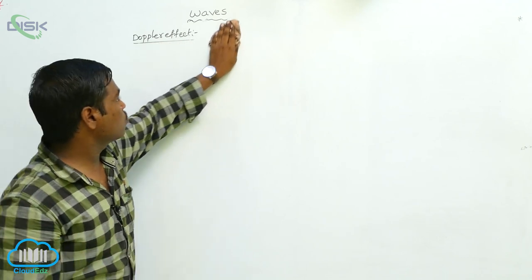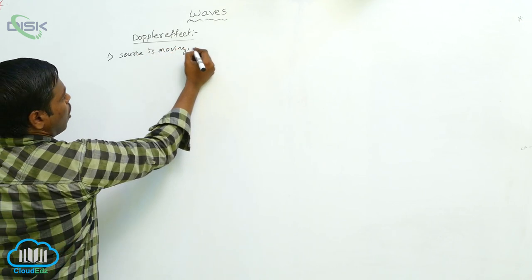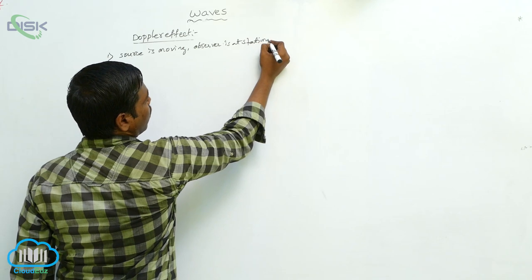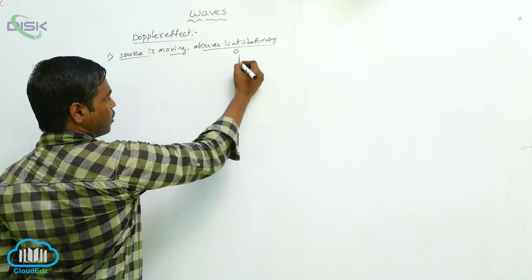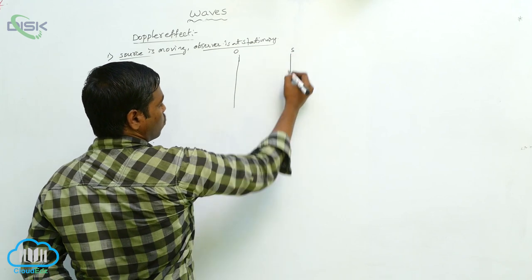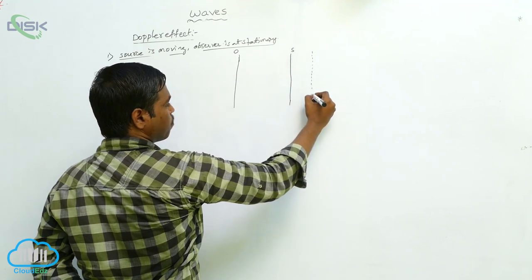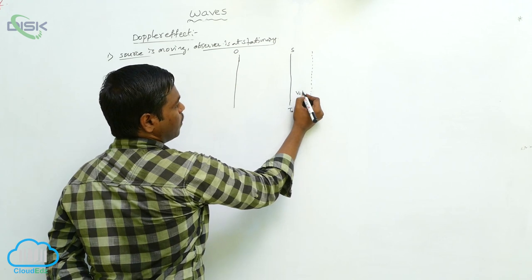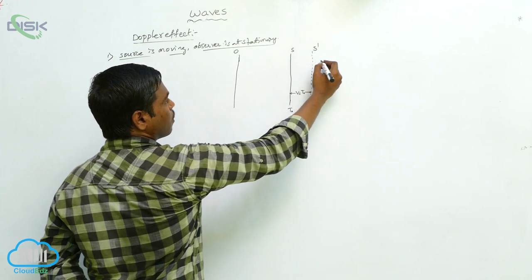For the first case, the source is moving and the observer is stationary. The observer is at a fixed place. The source is moving with speed Vs, and in time T0 it moves a distance Vs·T0, which is the distance between the source position S and its new position S dash.